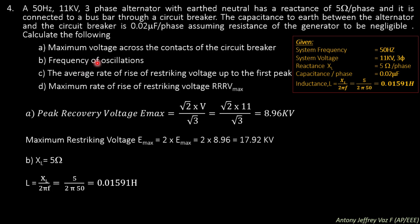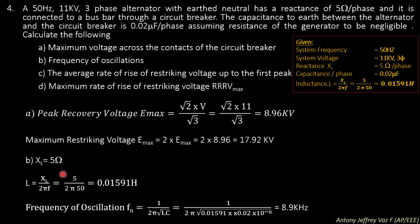Next, find the frequency of oscillation using Fn = 1 / (2π √(LC)). Substituting L = 0.01591 Henry and C = 0.02 microfarad = 0.02 × 10^-6 farad, we get a frequency of oscillation of 8.9 kHz.